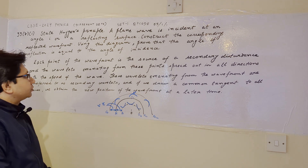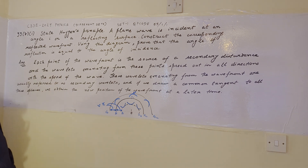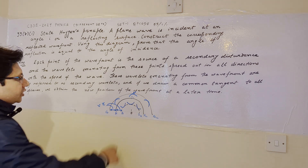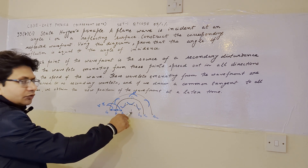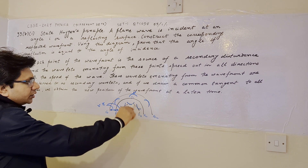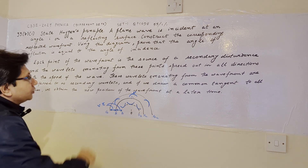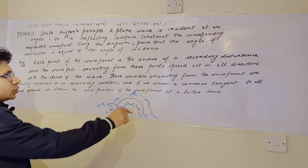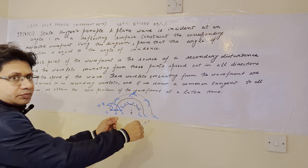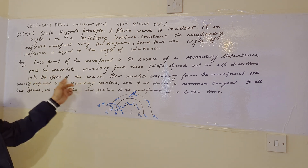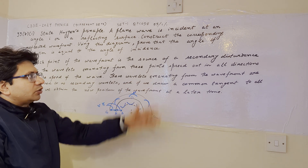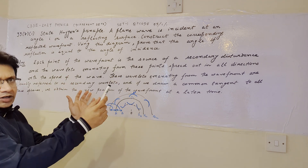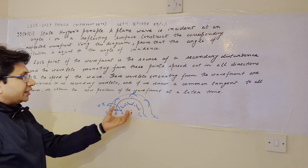The answer to the first part: each point of the wavefront is the source of secondary disturbance. As seen in the diagram, this source generates waves and there is a certain locus of these waves known as the wavefront. Wavelets emanate from these points in all directions with the speed of the wave, propagating in all directions.